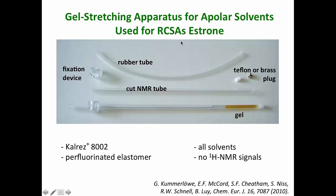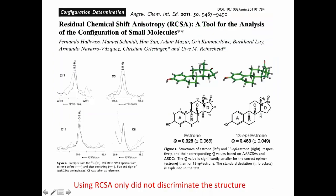In 2010, Burkhard Luy proposed this stretching device. This stretching device is a device just to stretch a gel inside the tube. And with that device, they performed this work in which Fernando Hallwass, Manuel Schmitt, Hansen, Adam Mazur, Kummerløve was a student by Burkhard Luy, my colleague Armando Navarro, Christian Griesinger, and Ulrich Neuhaus. So what they did is they tried to measure RCSAs in this device, but there were some problems there. But still, the paper was published. They proposed the concept. But using only RCSAs, they couldn't discriminate, for example, the structure of estrone versus the structure of epistrone. And they had to combine with RDCs.